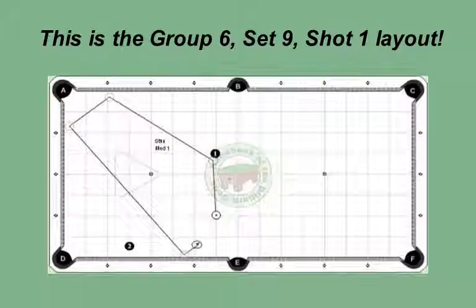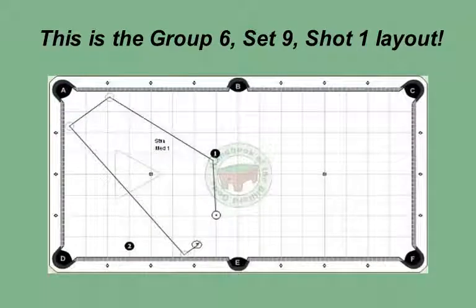This is the Group 6, Set 9, Shot 1 layout. To start, you are on the good side of the one ball. The area that the cue ball must travel is limited to the half table area.